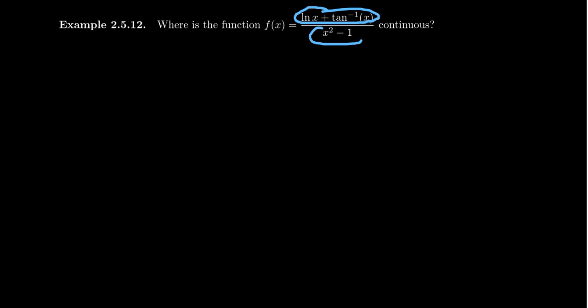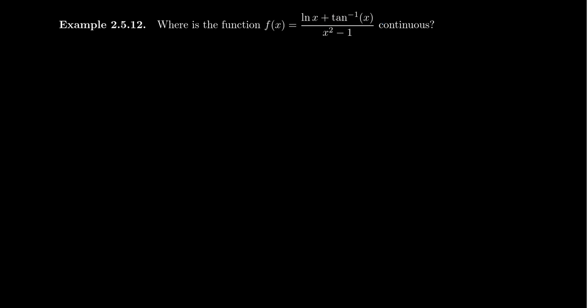What about the denominator? x squared minus 1 is a polynomial, so it'll be continuous. Thus the ratio will be continuous so long as the denominator doesn't go to zero and the numerator is continuous. Natural log and all logarithms are continuous on their domains. Arctangent is an inverse trigonometric function, continuous on its domain as well. So because adding, subtracting, multiplying, and dividing continuous functions preserves continuity, asking where the function is continuous is basically just asking what the domain of the function is — the two questions are saying the same thing. This function will be continuous on its domain.